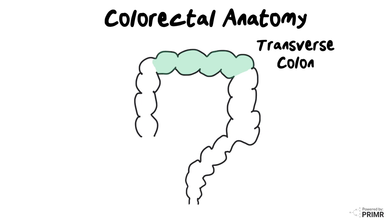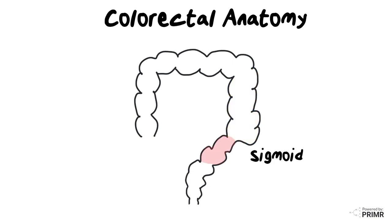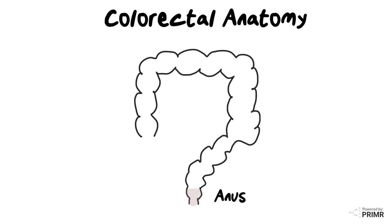It then connects with the transverse colon, which goes across from the right side to the left side of the upper abdomen. The descending colon ducks down the left side of the body and feeds into the sigmoid colon, which enters the pelvis. The rectum is in the true pelvis and stool ultimately leaves the body through the anus.